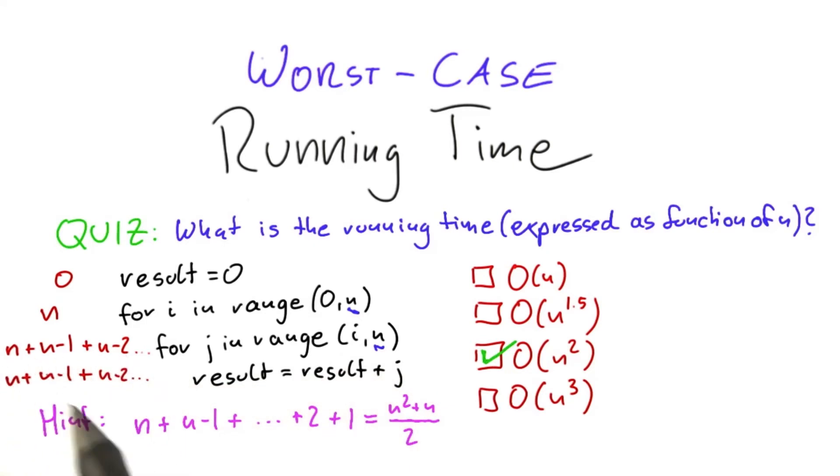So these two parts here, that is exactly where you need the hint. So it's 2 times this part here. So it's 2 times n squared plus n over 2. So the total here is n squared plus n.